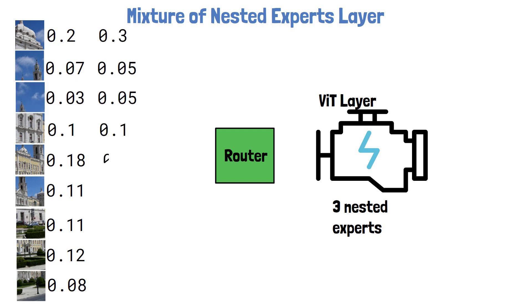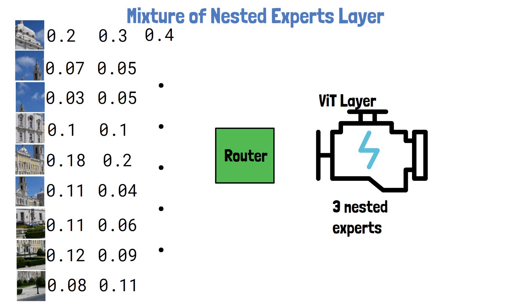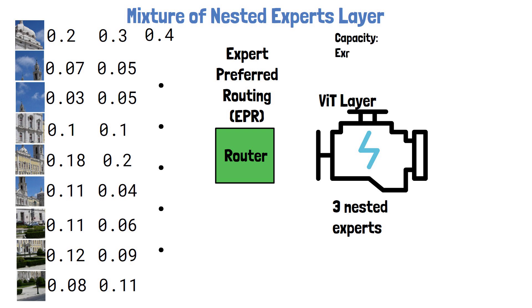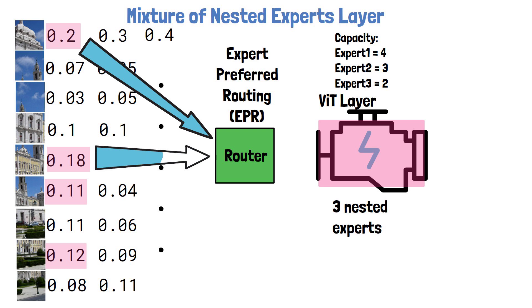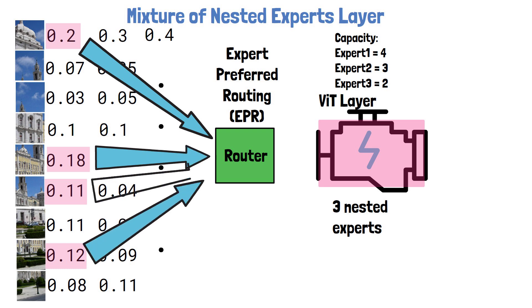The second column represents the probabilities of tokens to be processed by the second expert, and the third column is for the third expert. Then, the router uses a mechanism called expert preferred routing, which is presented in the paper. Each expert has a capacity of tokens which it should process. In our example, let's assume the capacity for the first expert is four tokens, the second expert can process three tokens, and the third expert can process two tokens — but note that this distribution is configurable. The first expert we allocate tokens to is the full layer, since we want the most important input tokens to be handled by the most capable expert.